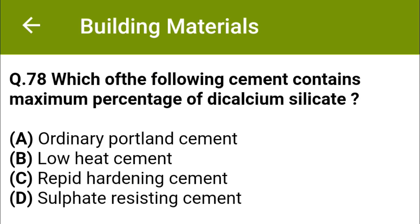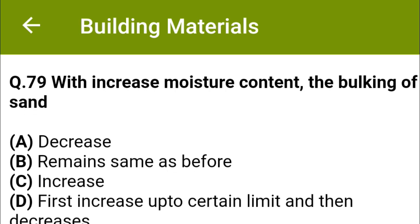Which of the following cement contains maximum percentage of dicalcium silicate? Option A, ordinary Portland cement; option B, low heat cement; option C, rapid hardening cement; option D, sulphate resisting cement. The correct answer is option B, low heat cement.